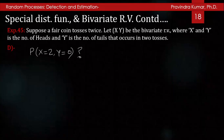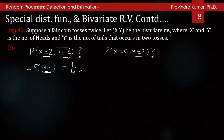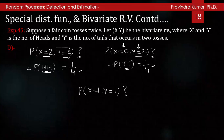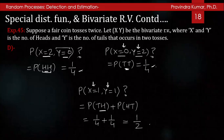From this example: P(X=2, Y=0) = P(HH) = 1/4; P(X=0, Y=2) = P(TT) = 1/4; P(X=1, Y=1) = P(HT or TH) = 2/4 = 1/2.